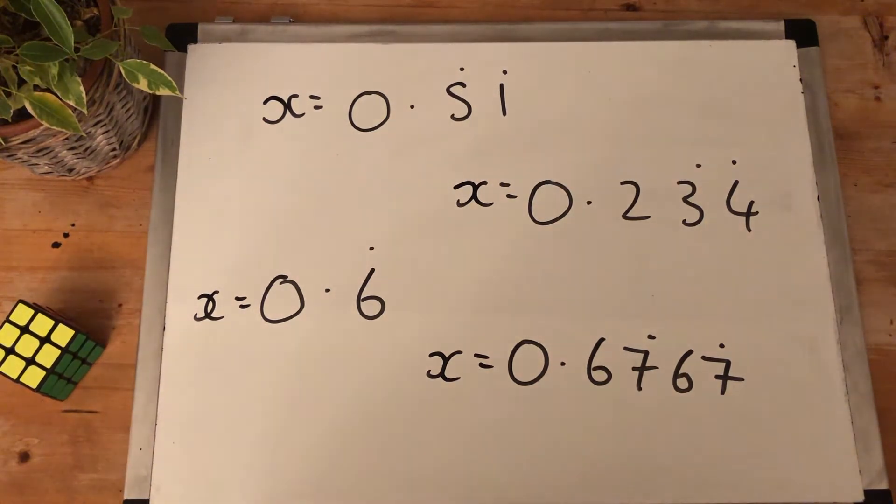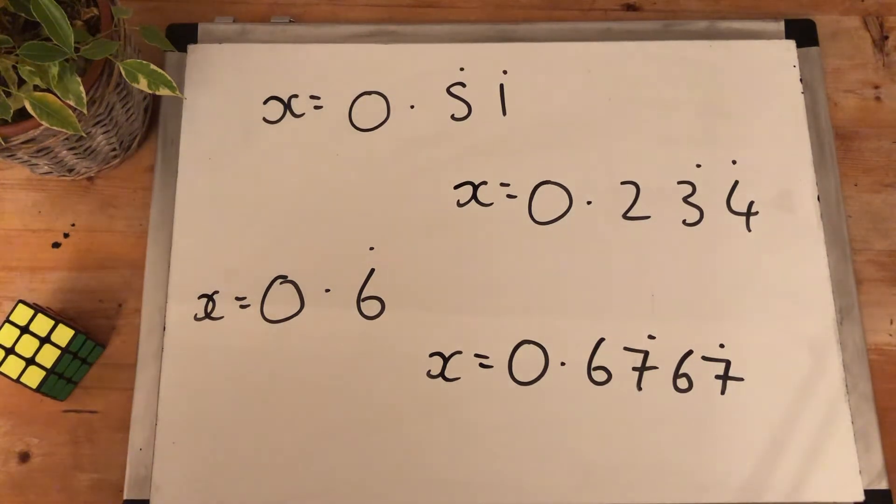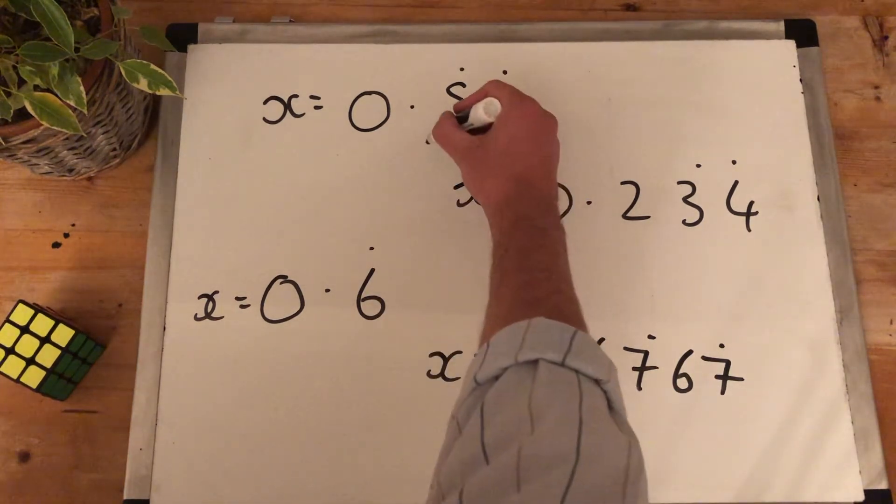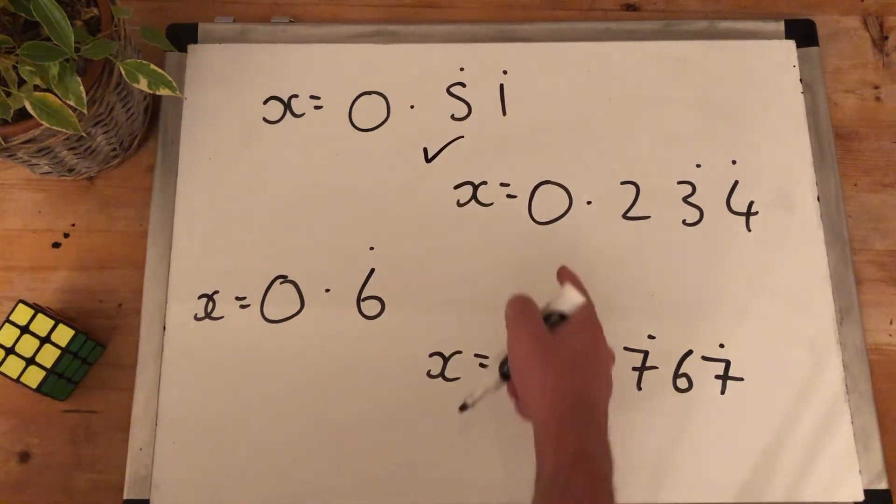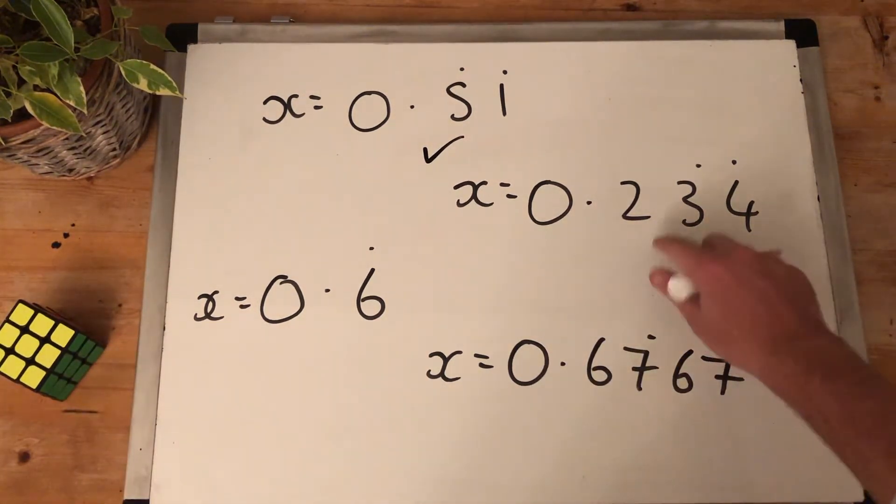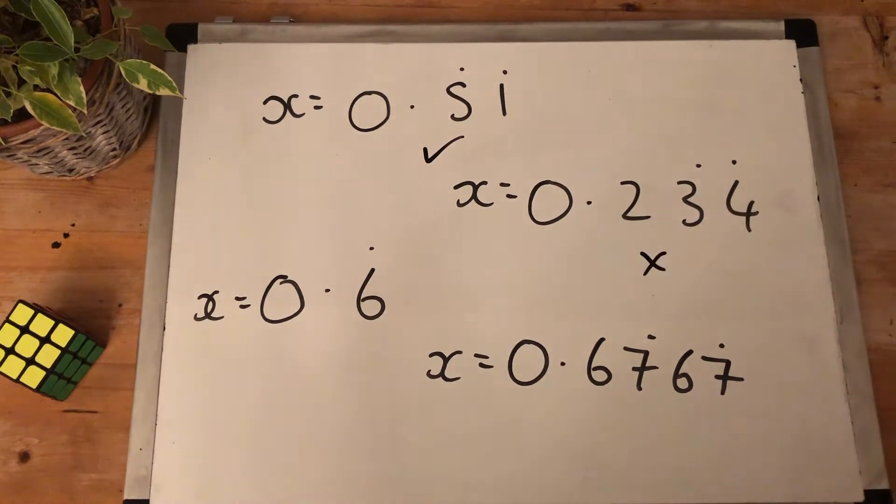Step two is you need to check: does everything, not most things, does everything after the decimal point recur? 0.51 - everything after the decimal point recurs, we can solve it. 0.2343 - well, the three and the four recur, but the two doesn't. We can't solve this one yet.